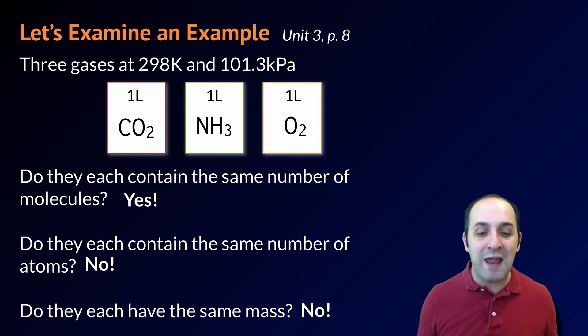And finally, they do not have the same mass. The mass of each substance is going to depend upon the atoms that comprise that substance, and since each of these substances is comprised by different types and numbers of atoms, they're each going to be expected to have different masses as a result.